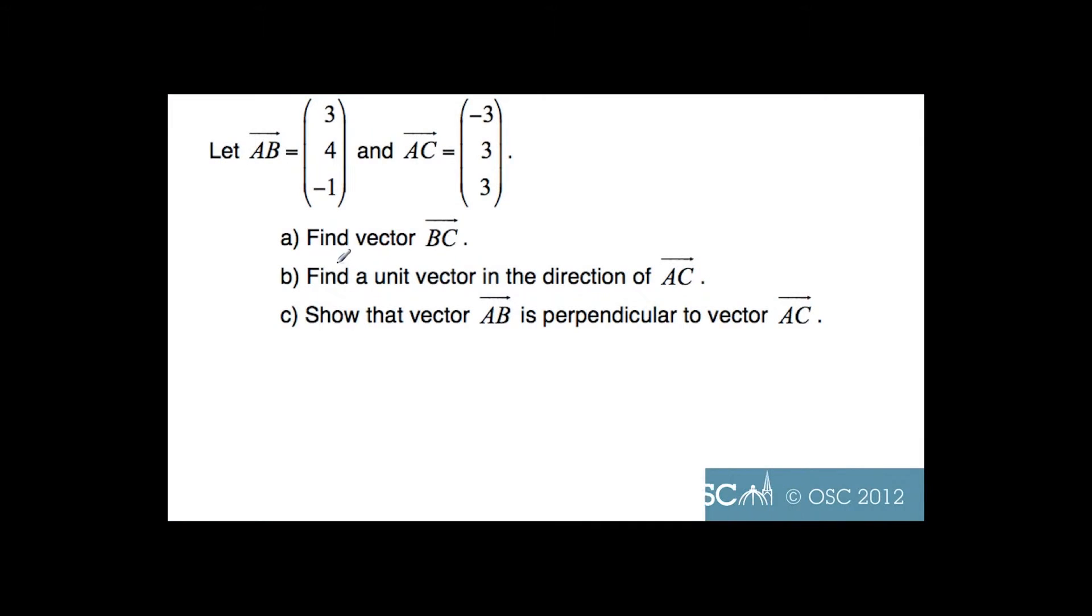In this example, we're going to find vector BC given vector AB and AC. If I look at part A, I know if I go from B to A and then I add A to C, I will get vector BC because I'll go from point B to A and then from A to C, and that will be vector BC.